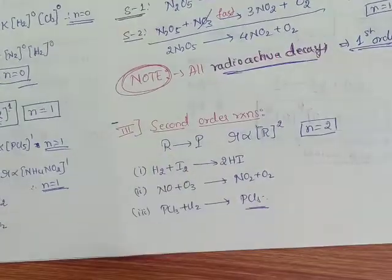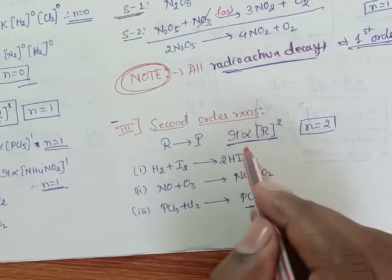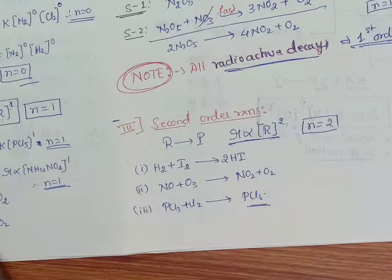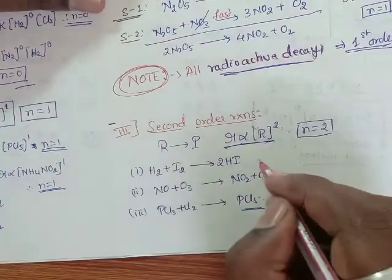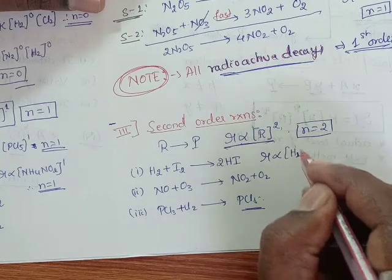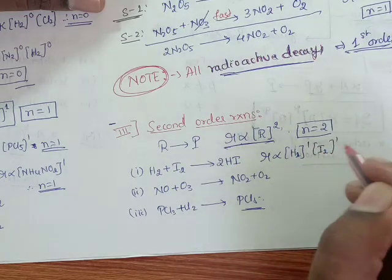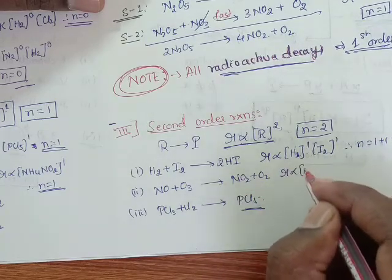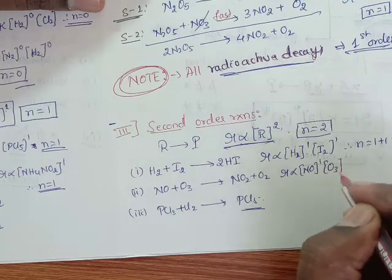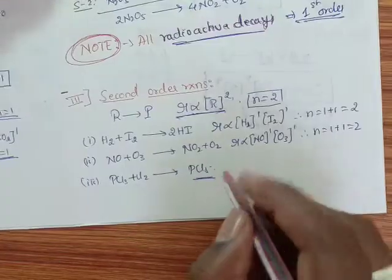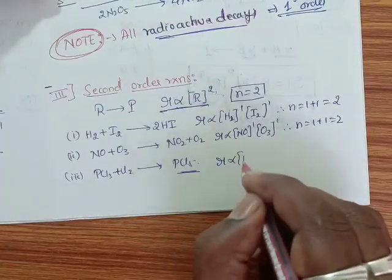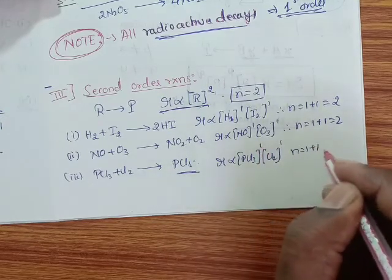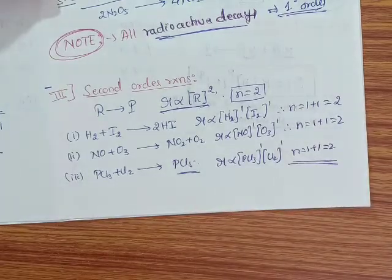Coming to second-order reaction. If the rate of reaction is directly proportional to the second power of the molar concentration of the reactant, it is called a second-order reaction. Examples: H₂ + I₂ → 2HI gives R = K[H₂]¹[I₂]¹, so N = 1 + 1 = 2. NO + O₃ → NO₂ + O₂ gives R = K[NO]¹[O₃]¹, so N = 2. PCl₃ + Cl₂ → PCl₅ gives R = K[PCl₃]¹[Cl₂]¹, so N = 2.